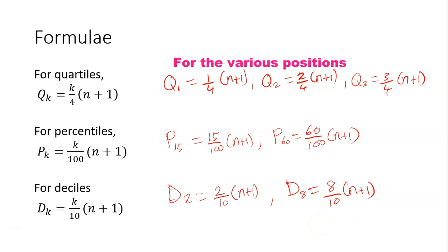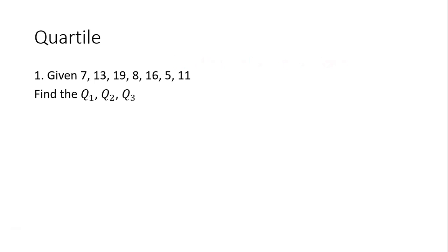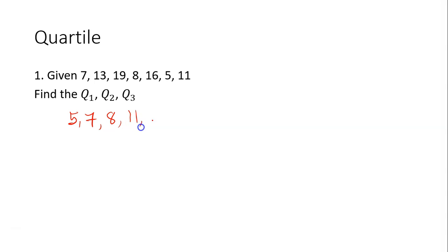Question 1: Given 7, 13, 19, 8, 16, 5, and 11, find the first, second, and third quartiles. To do this, you first arrange the data in ascending order: 5, 7, 8, 11, 13, 16, 19.